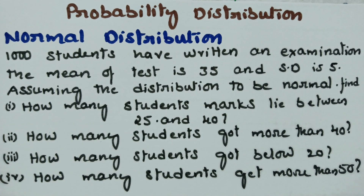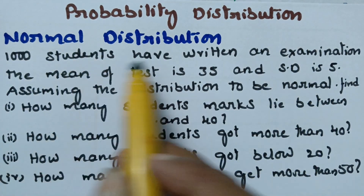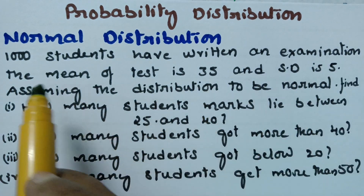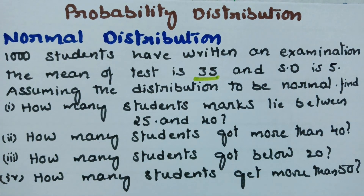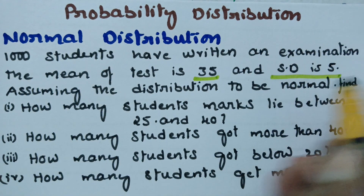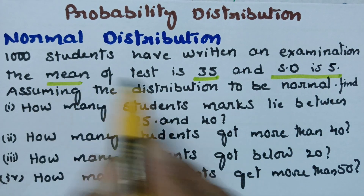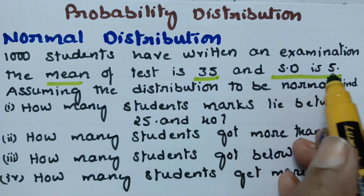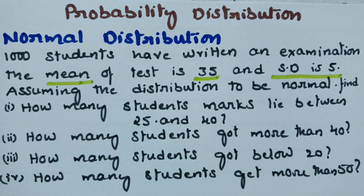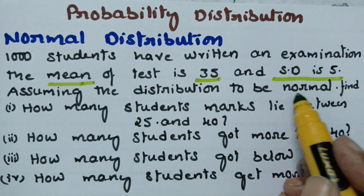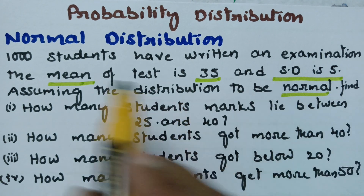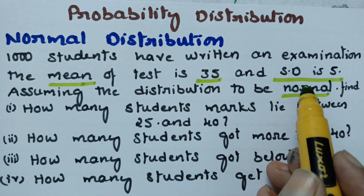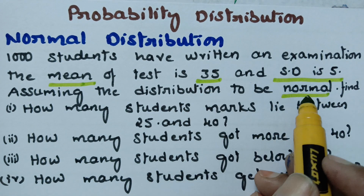Normal distribution. In today's video, the problem is: 1000 students have written an examination with a mean of 35 and standard deviation of 5. Since mean and standard deviation are given, we have to go with normal distribution.